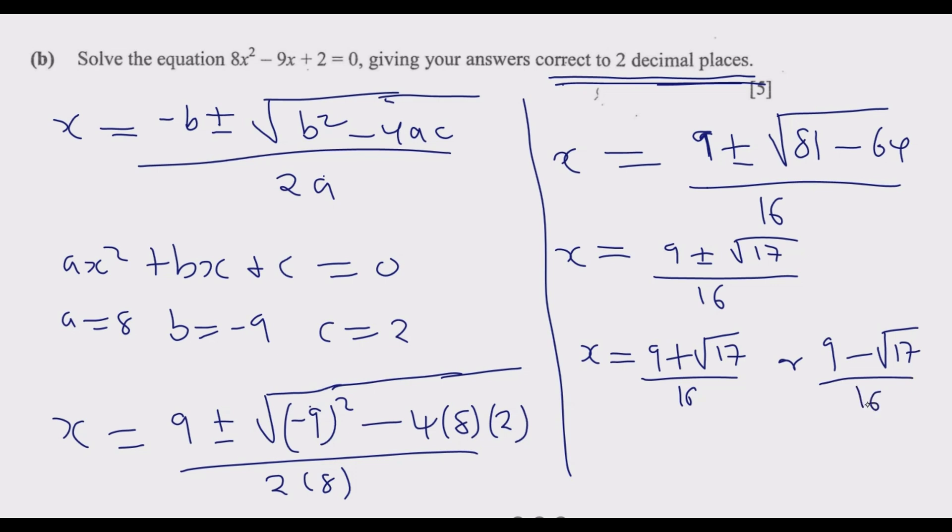Now we can use the calculator to simplify. x = 0.8202, which to three significant figures becomes 0.820. Similarly, the other value x = 0.3048, which is 0.305 to three significant figures. These are the values of x. This is how you answer this question to get the ten marks.